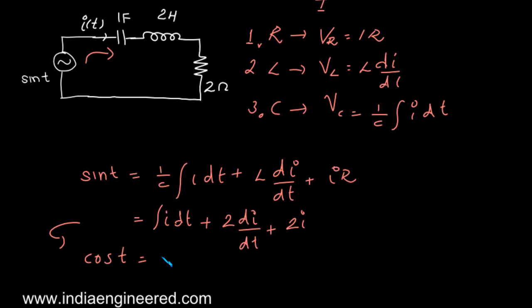The integral i dt, its derivative will be i, plus this will be 2 times d²i/dt² plus 2 di/dt.